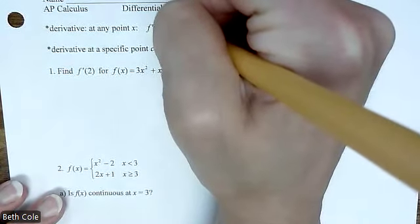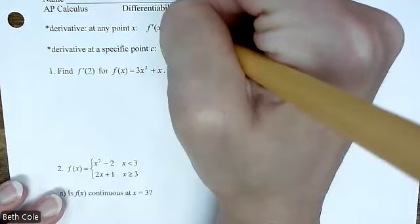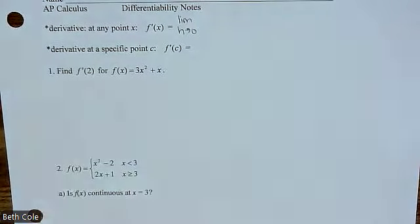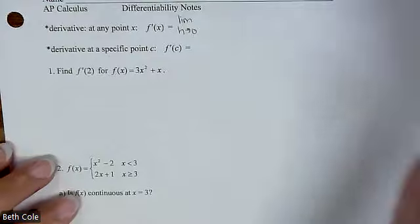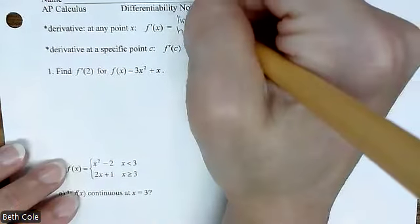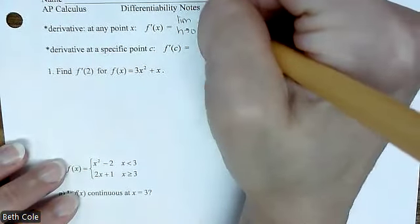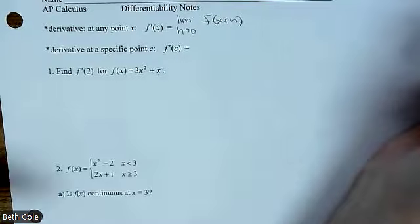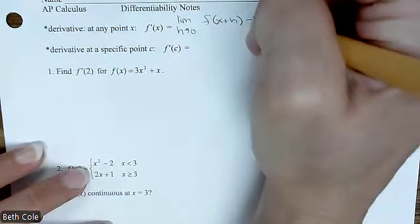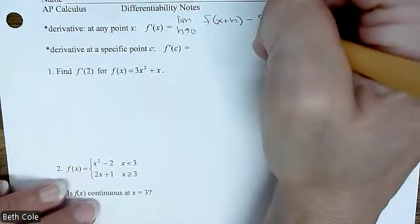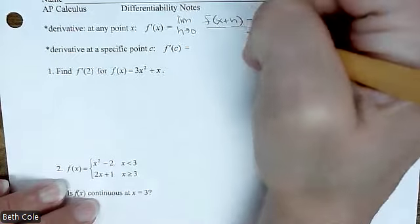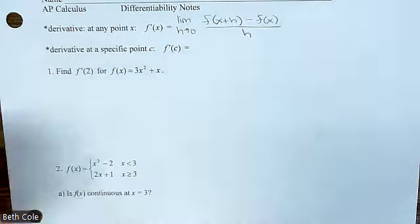Limit — there we go. h goes to zero. You want that distance to be nothing; that's what makes it instantaneous. And then what you guys were saying: f of x plus h, you plug in x plus h, minus f of x, over h.